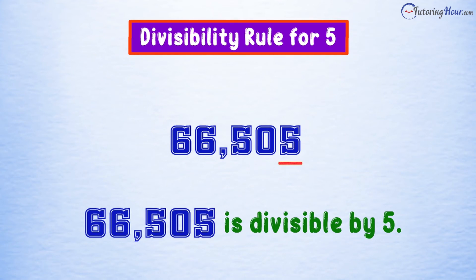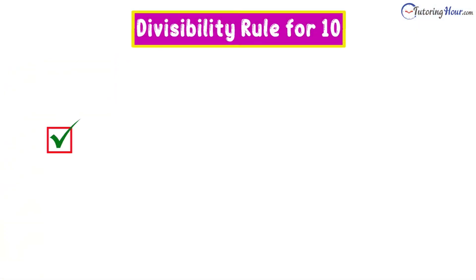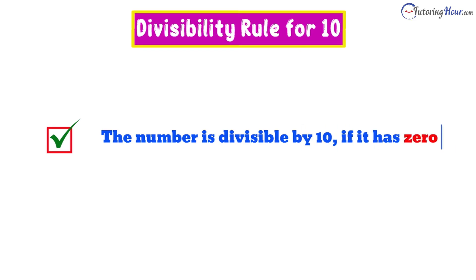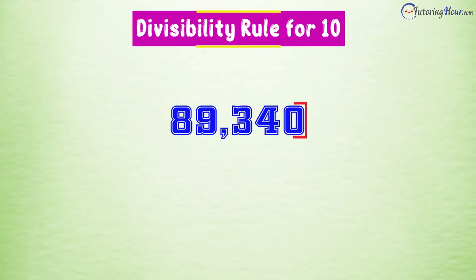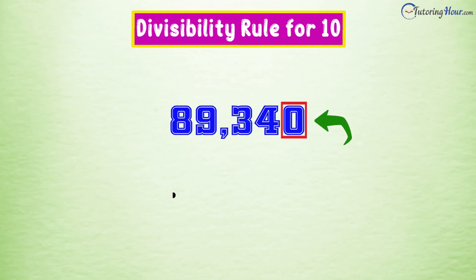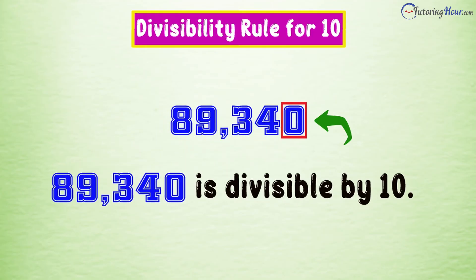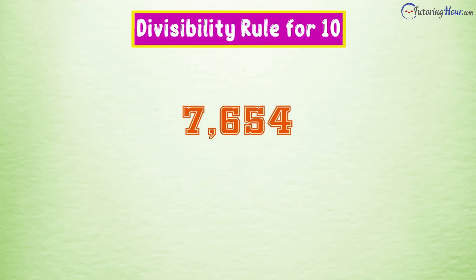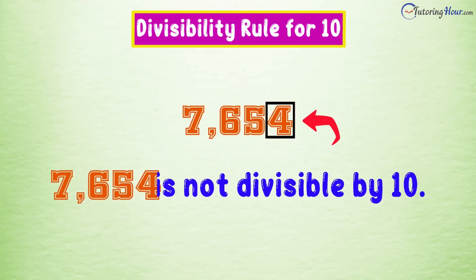Last but not the least, we can tell a number is divisible by 10 if it has 0 as its last digit. It is pretty obvious that this number is divisible by 10, while the other here we know is not divisible by 10.